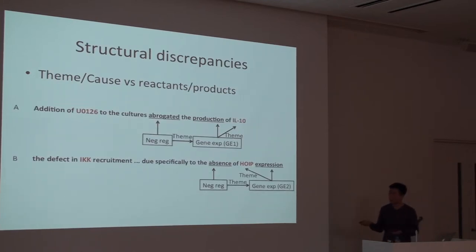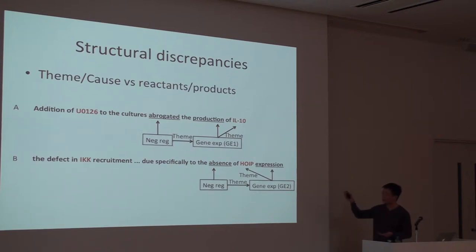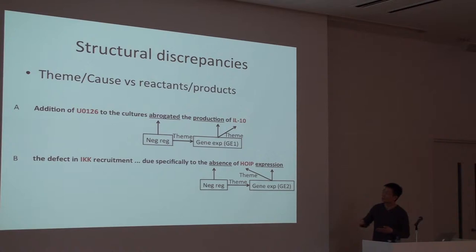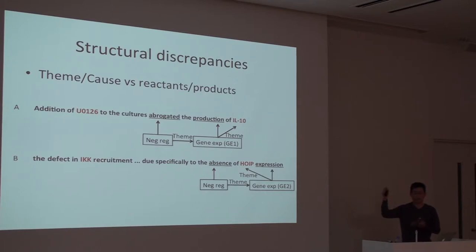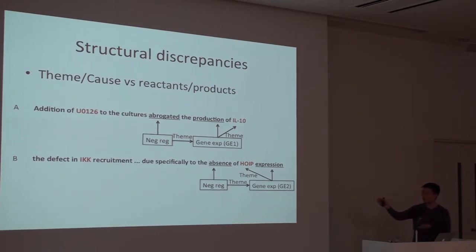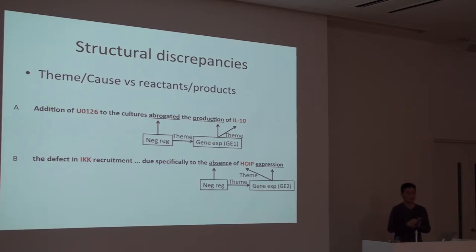This structural discrimination has caused some information loss. For example, in sentence A — 'the addition of U0126 to the cultures abrogated the production of IL-10' — we have a gene expression event which is a theme of negative regulation. In sentence B — 'the defect in IKK recruitment due specifically to the absence of HOIP expression' — there is also a gene expression event that is a theme of another negative regulation. But the roles of these two gene expression events are very different: in sentence A the gene expression event is passively regulated, while in sentence B the gene expression is actually regulating another event. In the current BioNLP format, we lost this directionality information.